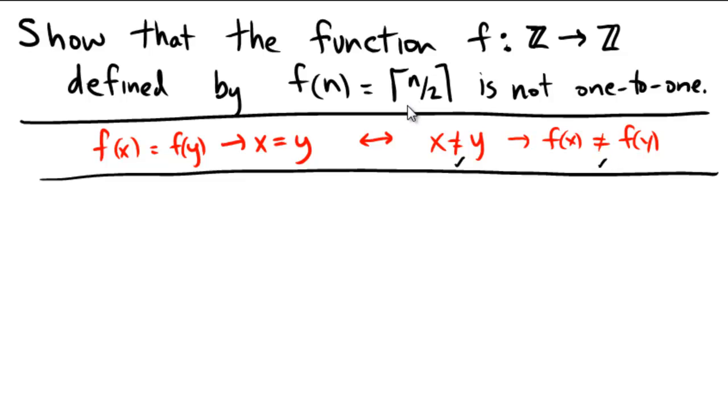Furthermore, recall that the ceiling function is the function that automatically rounds upward. It takes any number and rounds it to the smallest integer that is bigger than or equal to the value that you get out of this function.